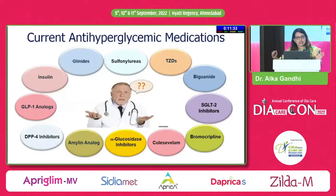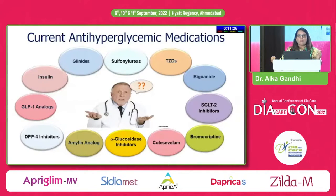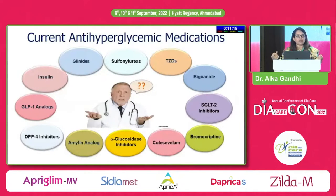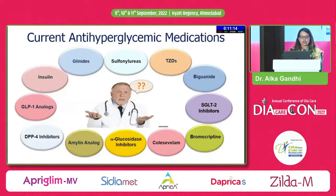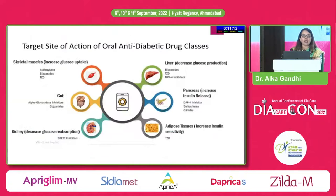We have a large basket of drugs today. Initially we had only three drugs — insulin, metformin and sulfonylurea. But today we have sulfonylureas, glinides, insulin, TZDs, biguanides, SGLT2 inhibitors, DPP-4 inhibitors and GLP-1 receptor agonists. So we are spoiled for choices. How do we choose?